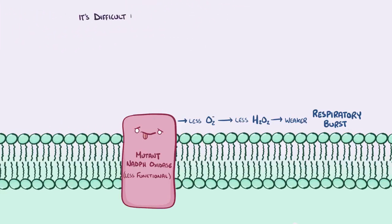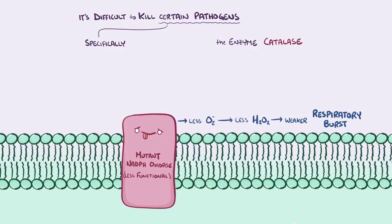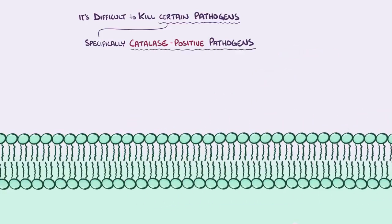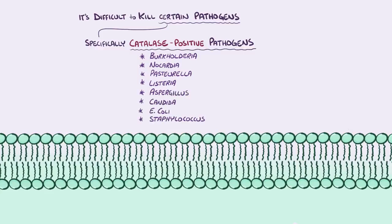This makes it tough for individuals with chronic granulomatous disease to kill certain pathogens — specifically fungi and bacteria that have an enzyme called catalase, and are therefore called catalase-positive pathogens. Catalase breaks down hydrogen peroxide into water and oxygen before it gets a chance to damage the pathogen. Normally there's enough hydrogen peroxide that catalase-positive pathogens can only break down some of it, but in CGD, there's already so little hydrogen peroxide that catalase-positive pathogens can break down all of it. The most common pathogens in CGD are catalase-positive: Burkholderia, Nocardia, Pasteurella, Listeria, Aspergillus, Candida, E. coli, Staphylococcus, and Serratia — remembered with the mnemonic 'CATS HAVE BEEN PLACES.'